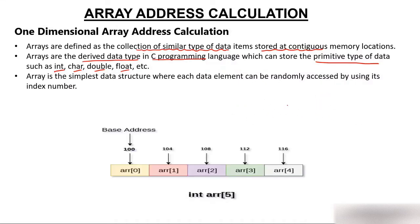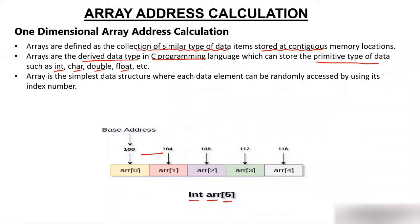Now if we see the diagram of the array: there is an array named A having size 5, so we have 5 blocks. The base address of this array, A[0], is 100, then 104. Why 104? Because the array is storing integer data, and an integer takes 4 bytes. So if integer takes 4 bytes, the next address will be 104, then 108, then 112. If it were 2 bytes, it would be 100, 102, 104, and so on.